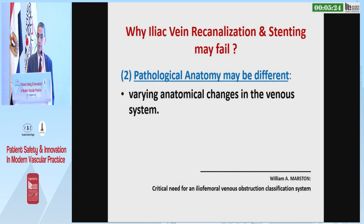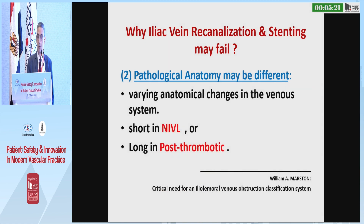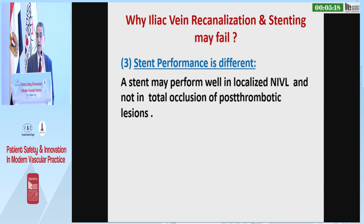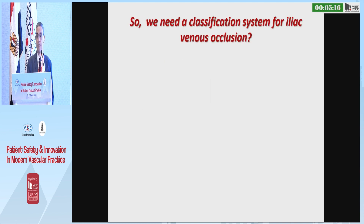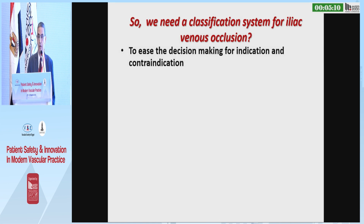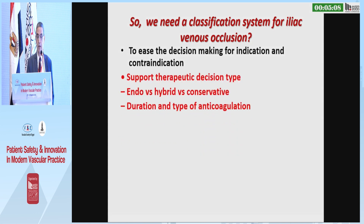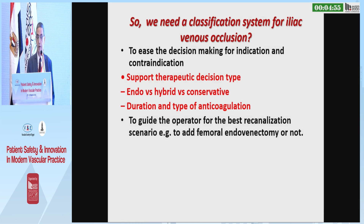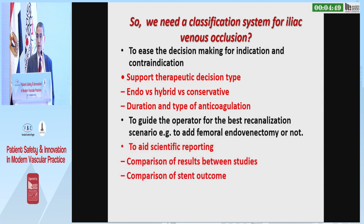The pathological anatomy is different between the two types of pathology, and stent performance is different as well. So we need a classification system specifically for iliac venous occlusion to ease decision-making, to support the therapeutic decision — either endovenous alone, hybrid, or conservative — and to guide the duration and type of anticoagulation, to guide the operator to the best recanalization scenario, to aid scientific reporting, and to predict the outcome.